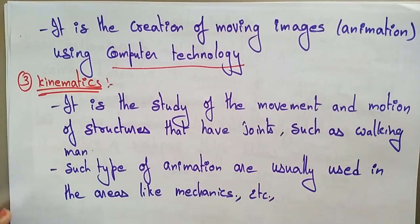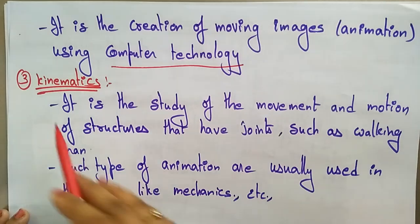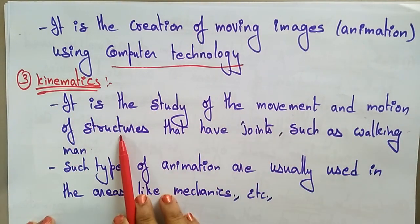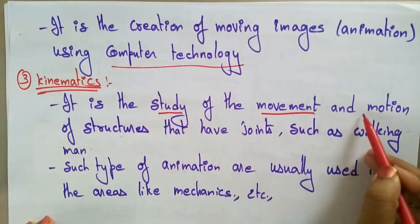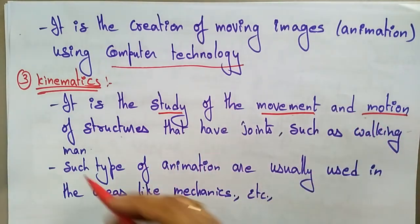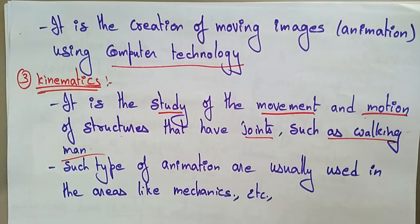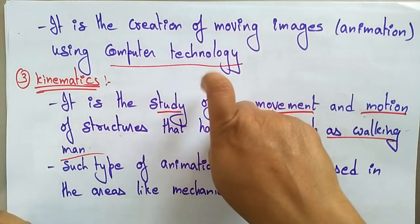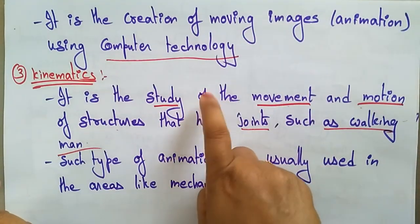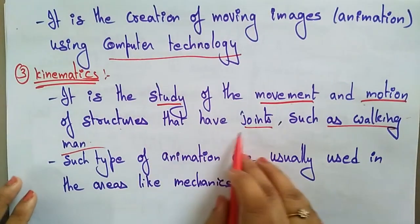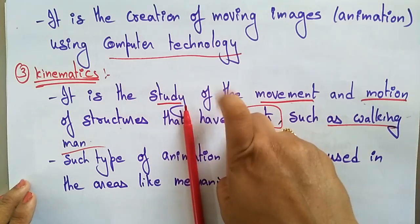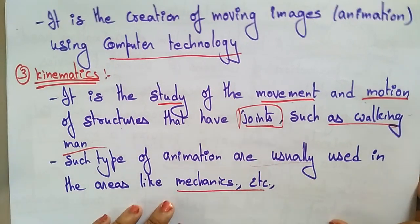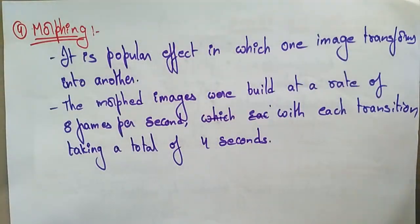Another type of animation is kinematics. Whenever you hear this name, it is related to physics. Kinematics is the study of movement and motion of structures that have joints, such as walking. Suppose a person wants to walk — he can't walk rigidly, he has to fold his leg while walking. There must be movement and motion, and the structure has joints — the leg bends to walk. Such type of animations are usually used in areas like mechanics.